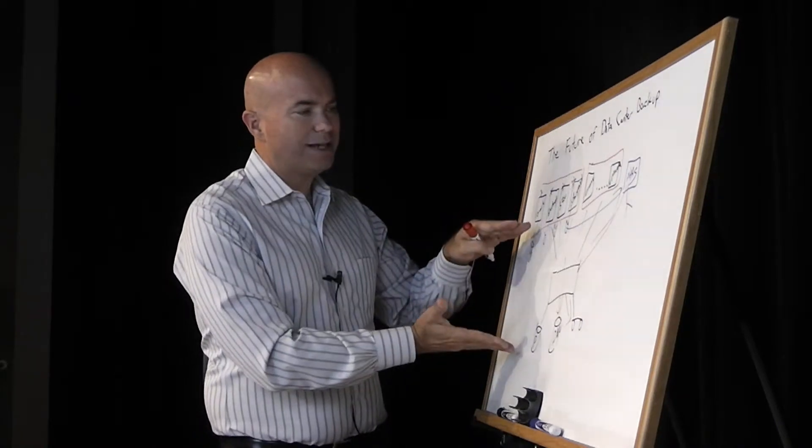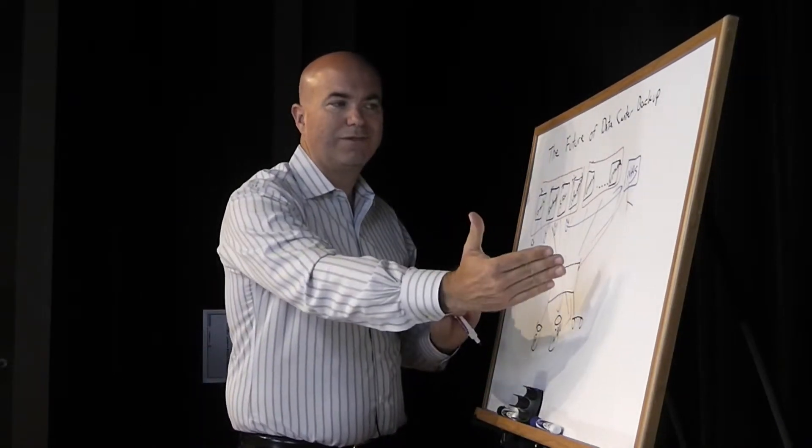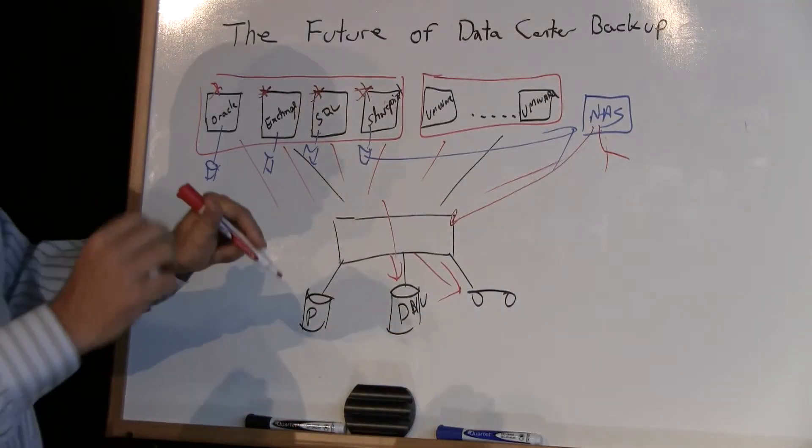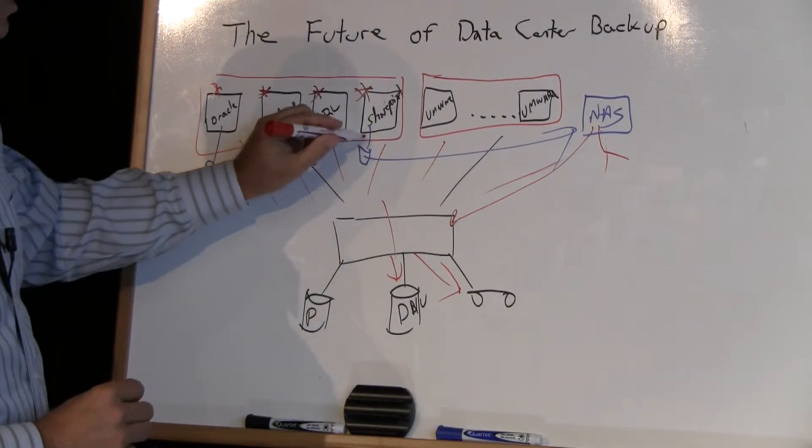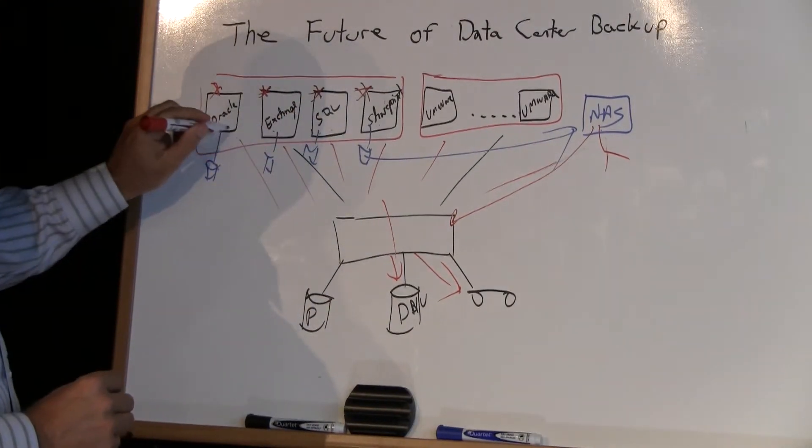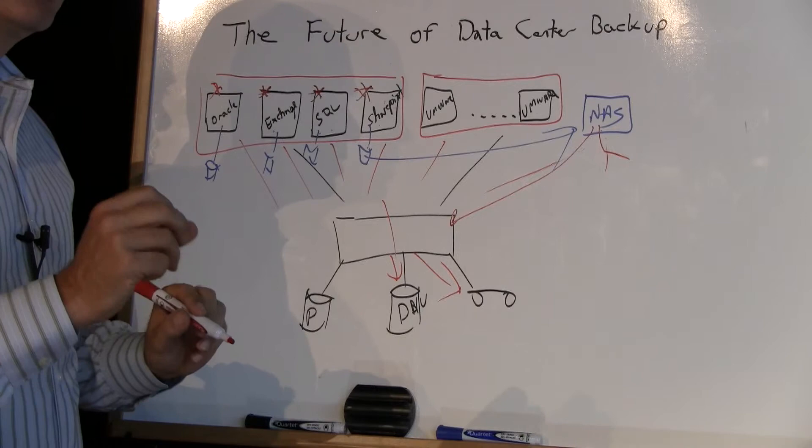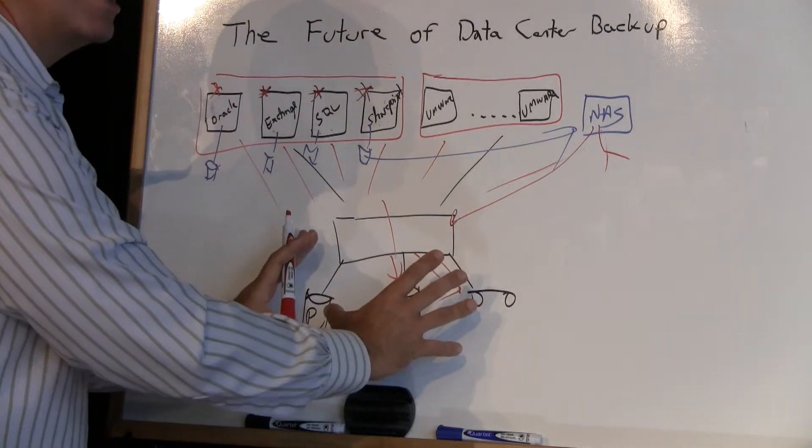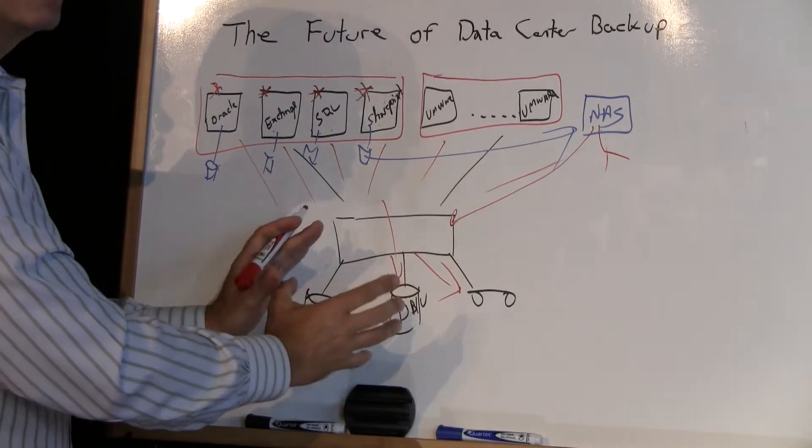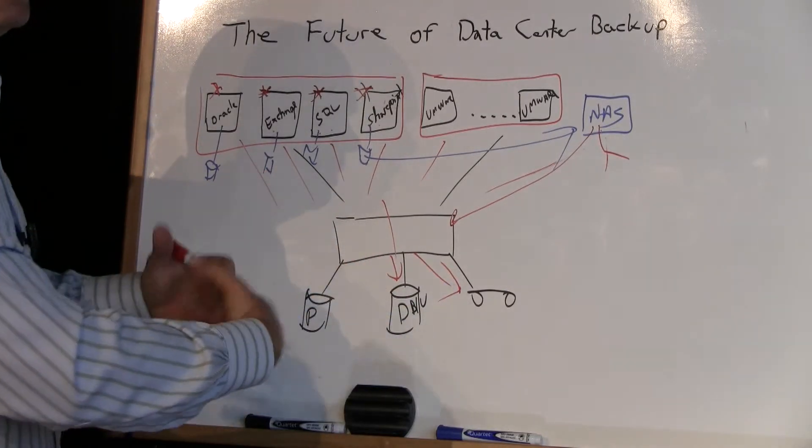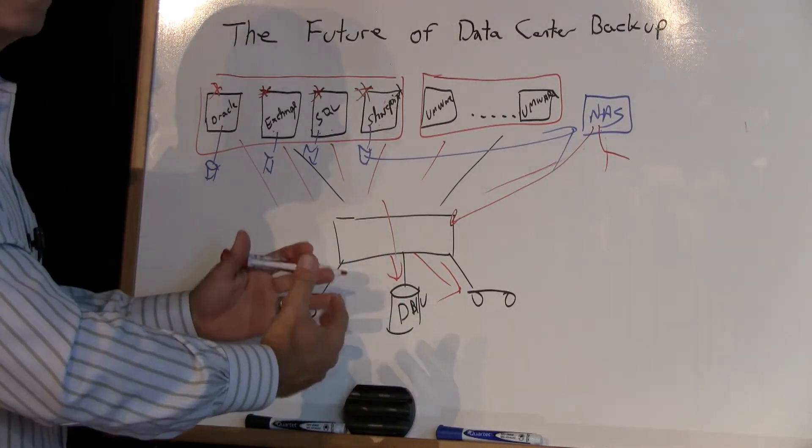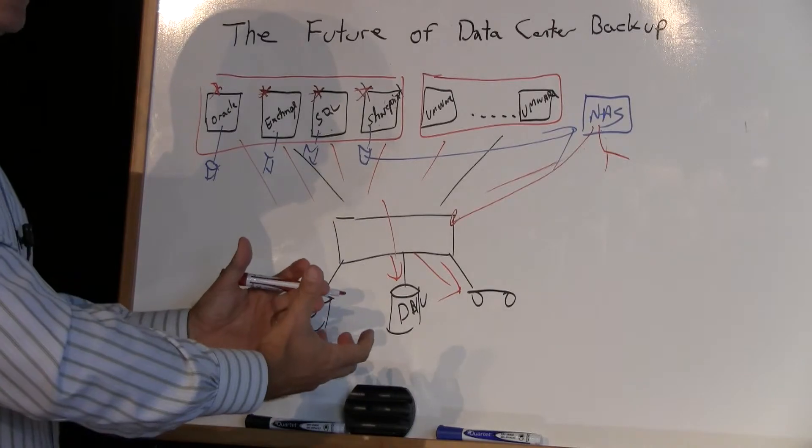I think you want an enterprise application to try to pick up as much of the environment as you can, but then where it makes sense and there's a business need, go ahead and have the ability to put in specific data protection capability. But then somehow have that centrally managed into a single interface and, even over time, a single policy manager, scheduler, everything like that.